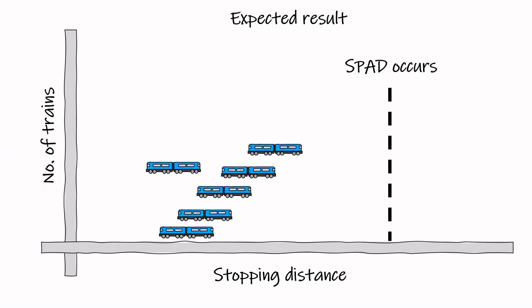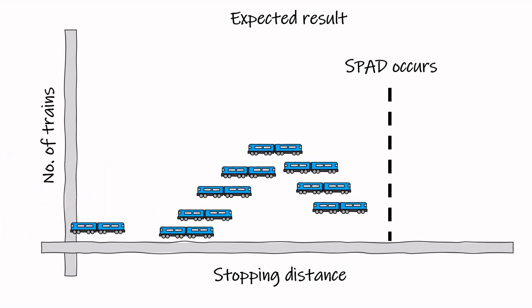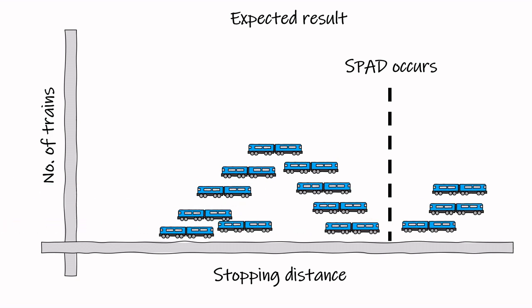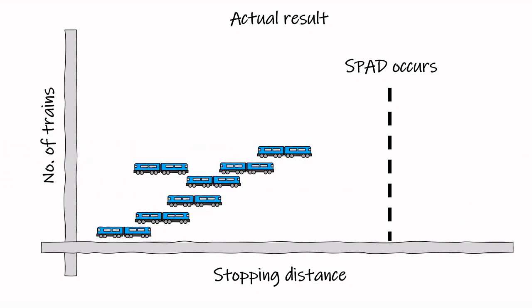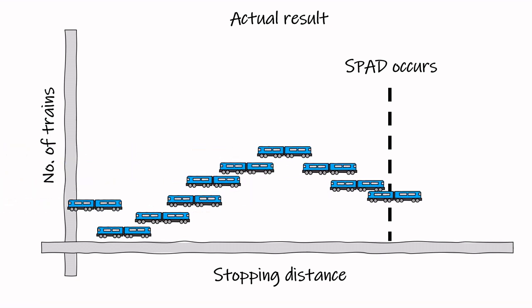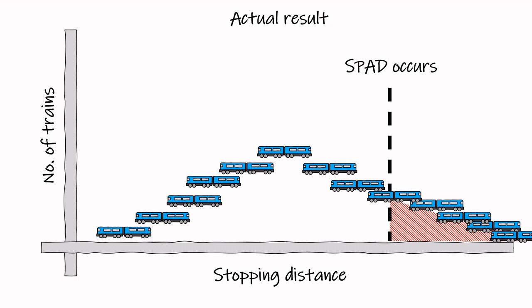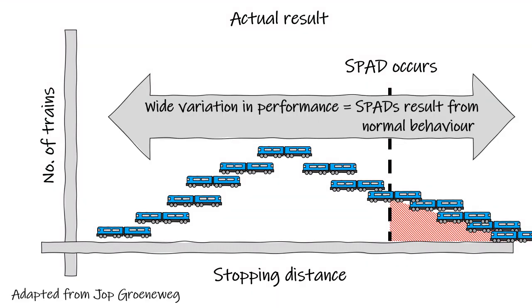They expected to see a clear difference in stopping distances between the times when things went right and times when SPADs occurred. They didn't — there was no clear difference in the behavior of drivers. Instead, they saw a wide variation in stopping distances: a normal distribution curve. On occasion, the stopping distances were greater than is allowable and a SPAD occurred. It was concluded that rather than being exceptional events, SPADs were simply a result of having such a wide variation in braking distances, and therefore were expected to occur under the current operating conditions.